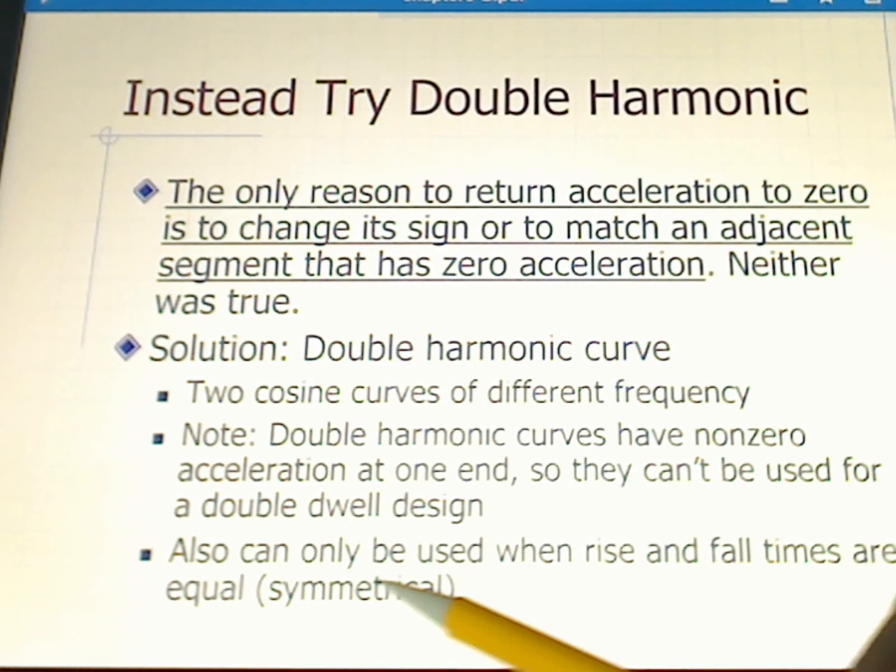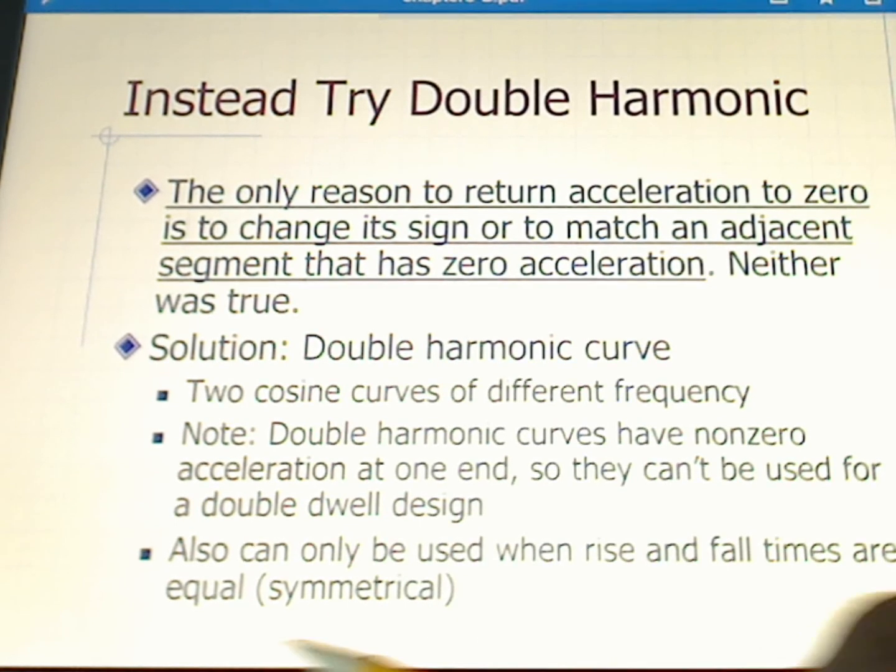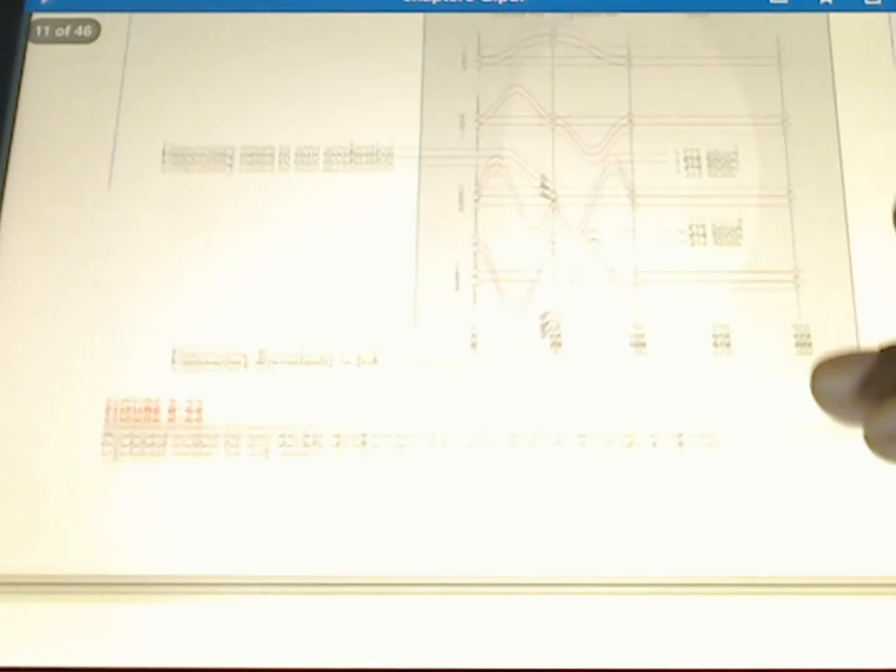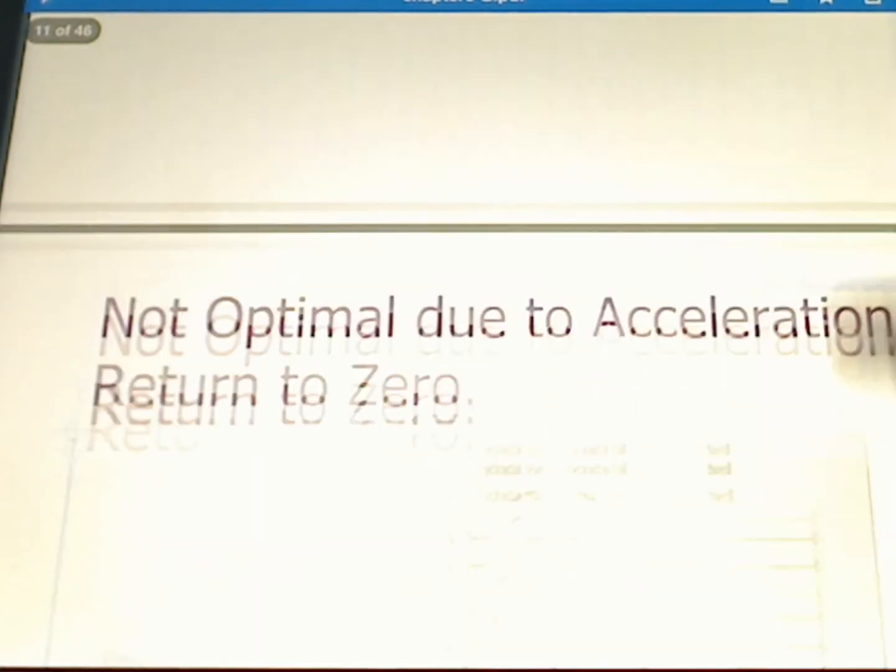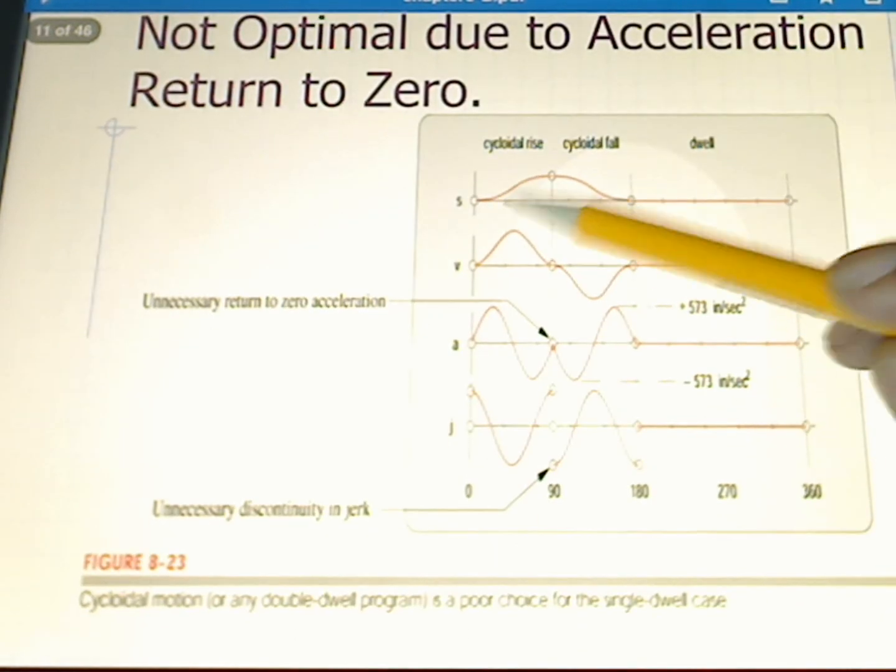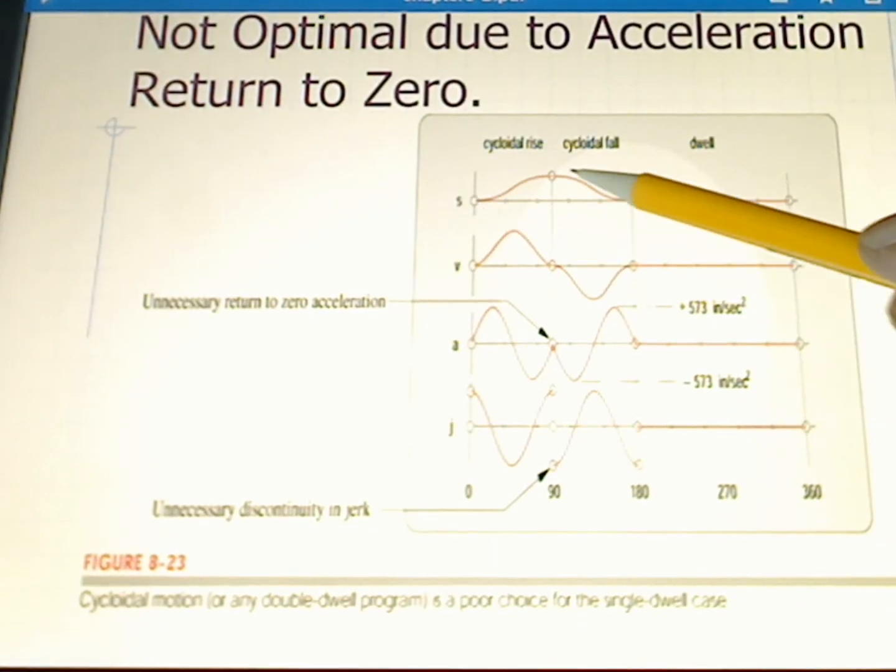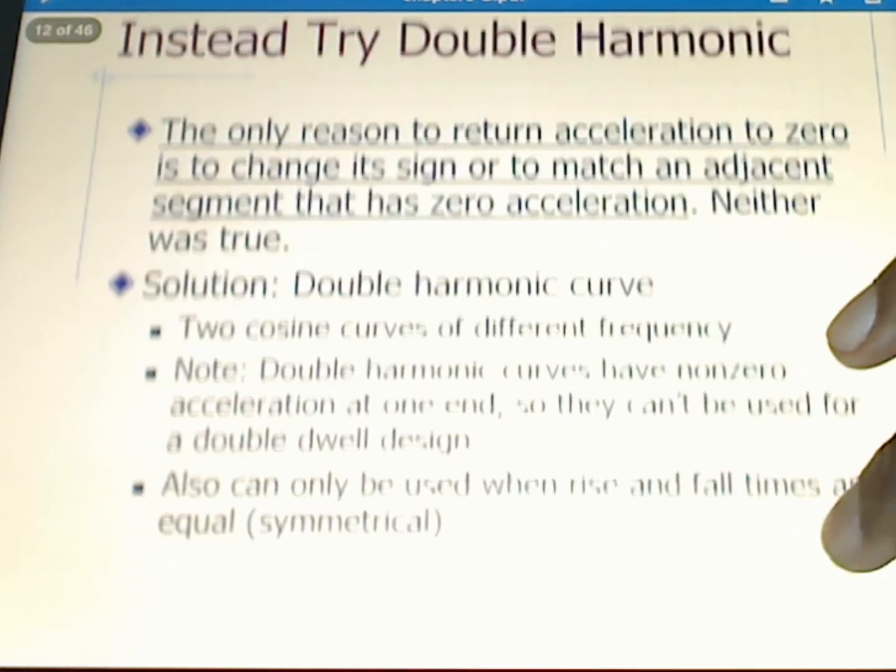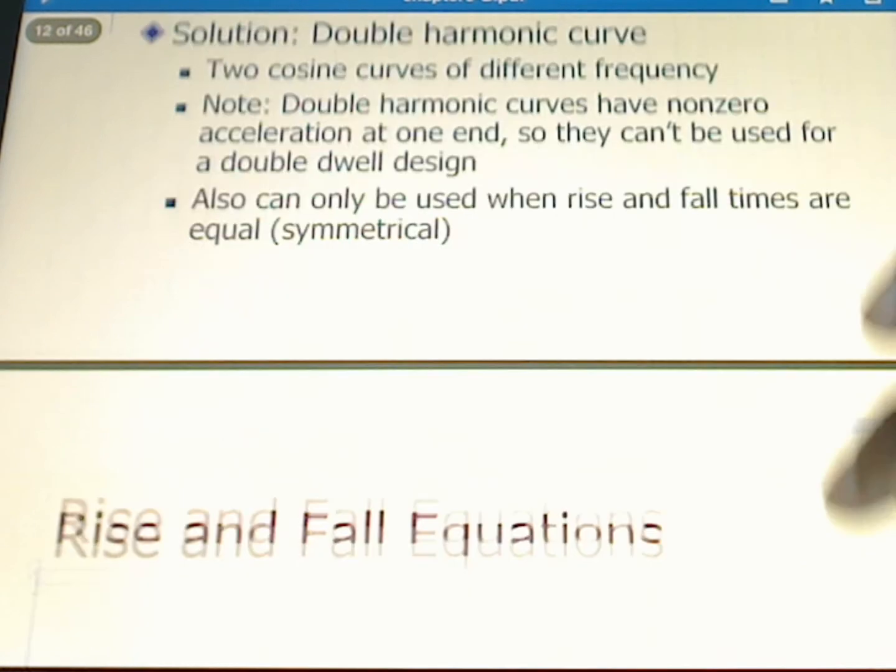Also, they can only be used when the rise and fall times are equal—that means there's a symmetry. In this particular case where we have a rise in 90 and a fall in 90, this is a good case to use a double harmonic because we do have symmetry in our rise and our fall.